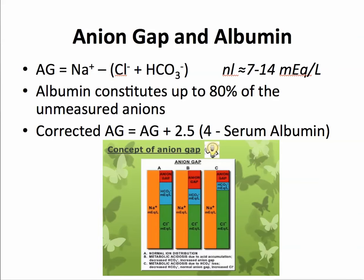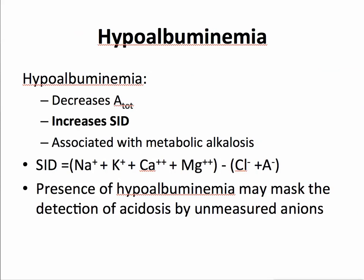Hypoalbuminemia could make you unable to detect an anion gap. Hypoalbuminemia decreases the total anion portion of the strong ion difference calculation, it increases the strong ion difference, and is associated with metabolic alkalosis. It can also mask the detection of acidosis by unmeasured anions. The take-home message is: if you have normal albumin, no compensatory calculation is needed. But if you have a very low albumin, you should calculate the corrected anion gap taking hypoalbuminemia into account.